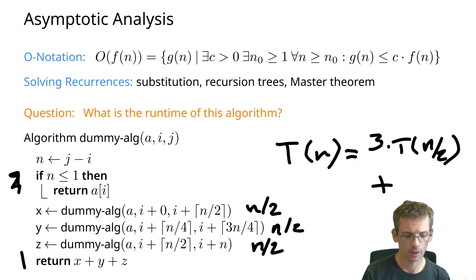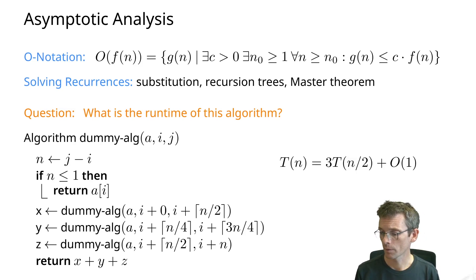Now this is the base case, which is only O(1). And then for the complete recurrence, you should also put in the base case. So that is our recurrence that you should be able to derive from that algorithm. What does it solve to?